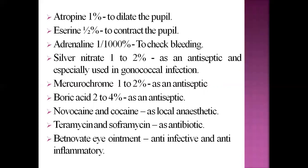Mercurochrome 1–2% is also used as an antiseptic eye drop. Boric acid 2–4% is also used as an antiseptic. Novocaine and cocaine act as local anesthesia — when any procedure has to be performed, this local anesthesia is used. Tetramycin and soframycin act as antibiotics. Betnovate eye ointment has anti-infective and anti-inflammatory action.